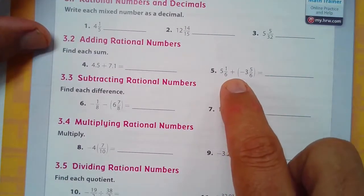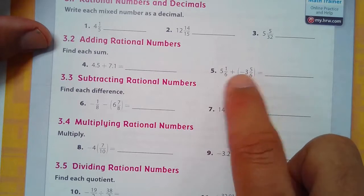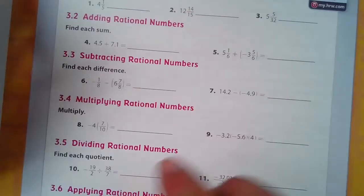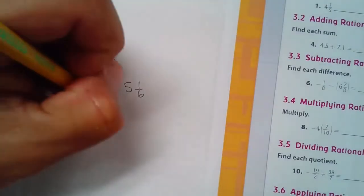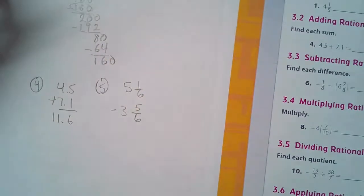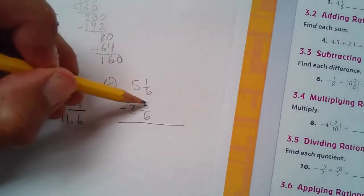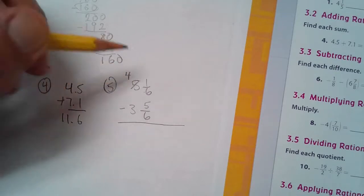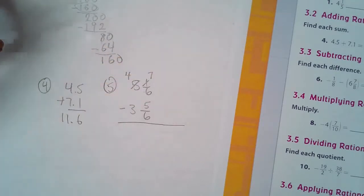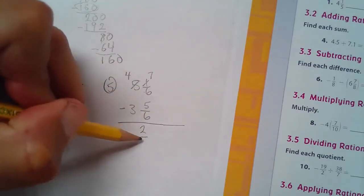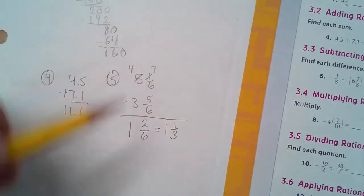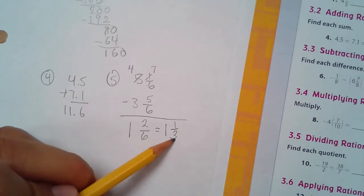Number five. We have this one. 5 1/6 plus negative 3 5/6. I have to subtract these two. And it's going to be positive. So, 5 1/6 minus 3 5/6. Well, can't do 1 minus 5. You're going to have to borrow. And our denominators are the same, so we're good with that. Borrow. Take one off of this and add 6 plus 1, which is 7. Now I have 7 minus 5, which is 2/6. 4 minus 3 is 1. I can simplify 2/6 to 1 and 1/3, because I divide this by 2 and that one by 2.